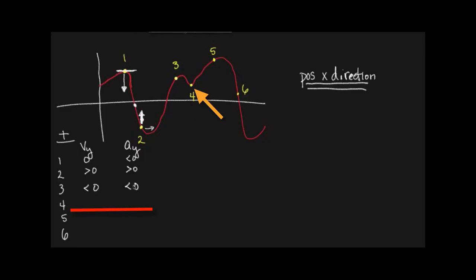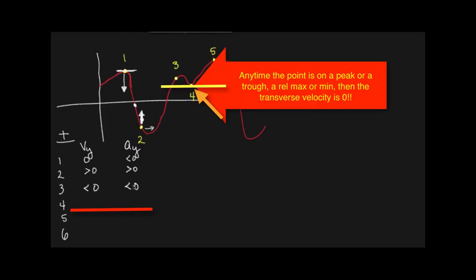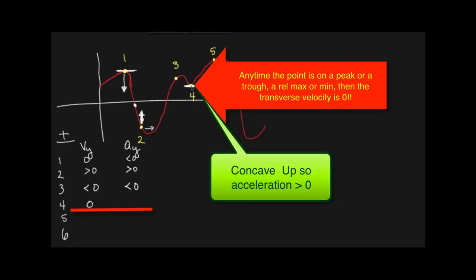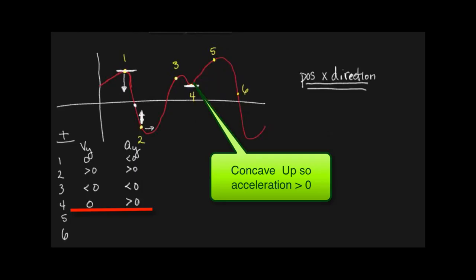Point four - what's going on at point four? The velocity is zero because it's at a zero slope. Very good. But since it's smiling, it's positive acceleration. Greater than zero, concave up.